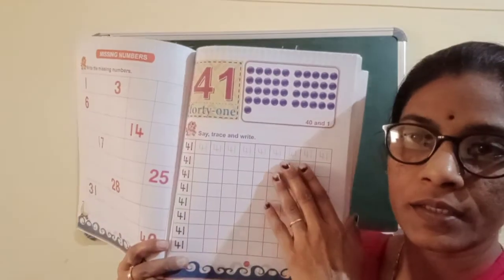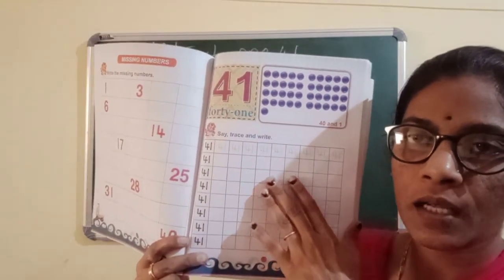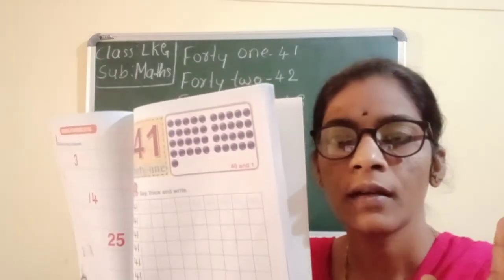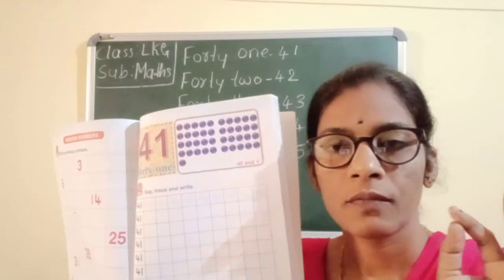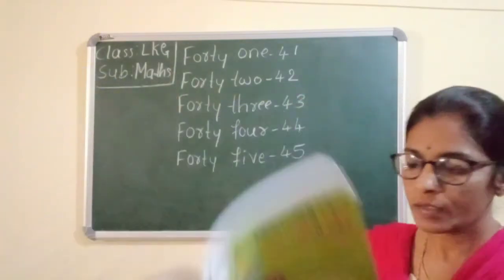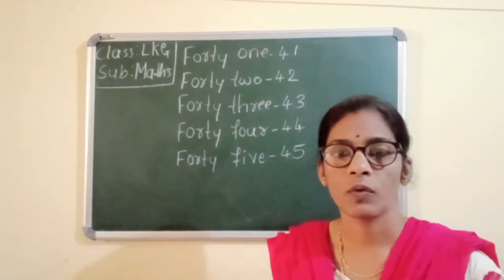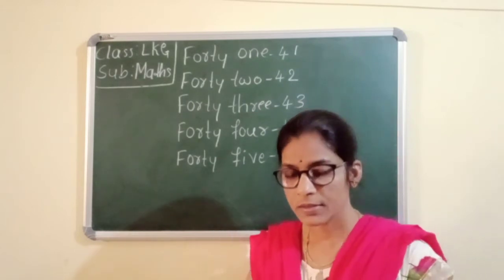Next you complete this one, same children up to 45. Page number 31, and the number name is 45. Complete 5 numbers only. And take one photocopy and send it to my number.